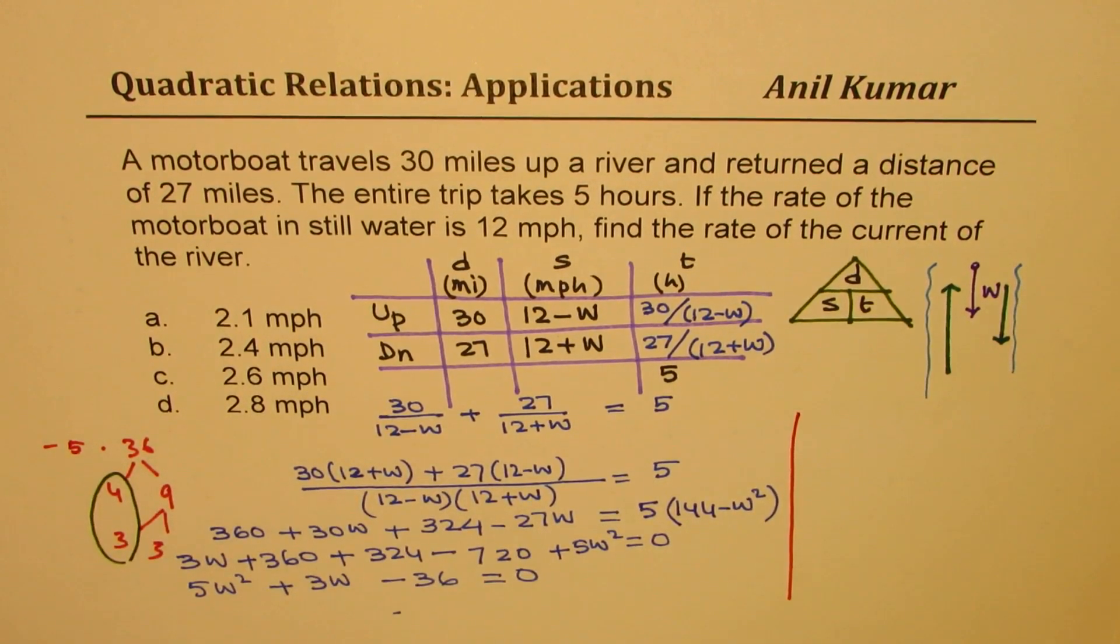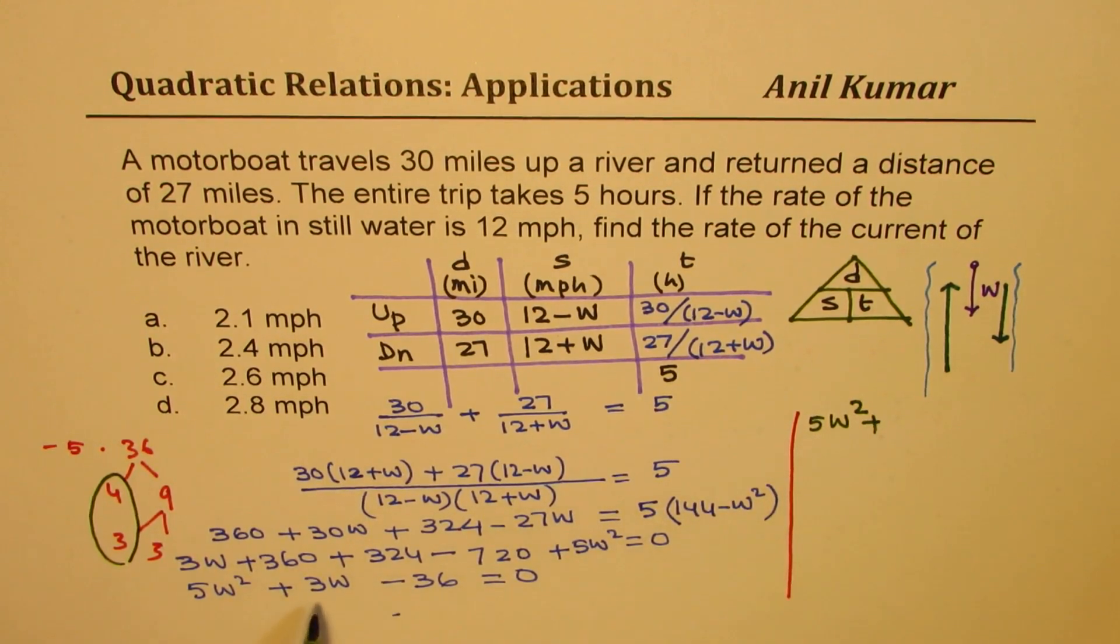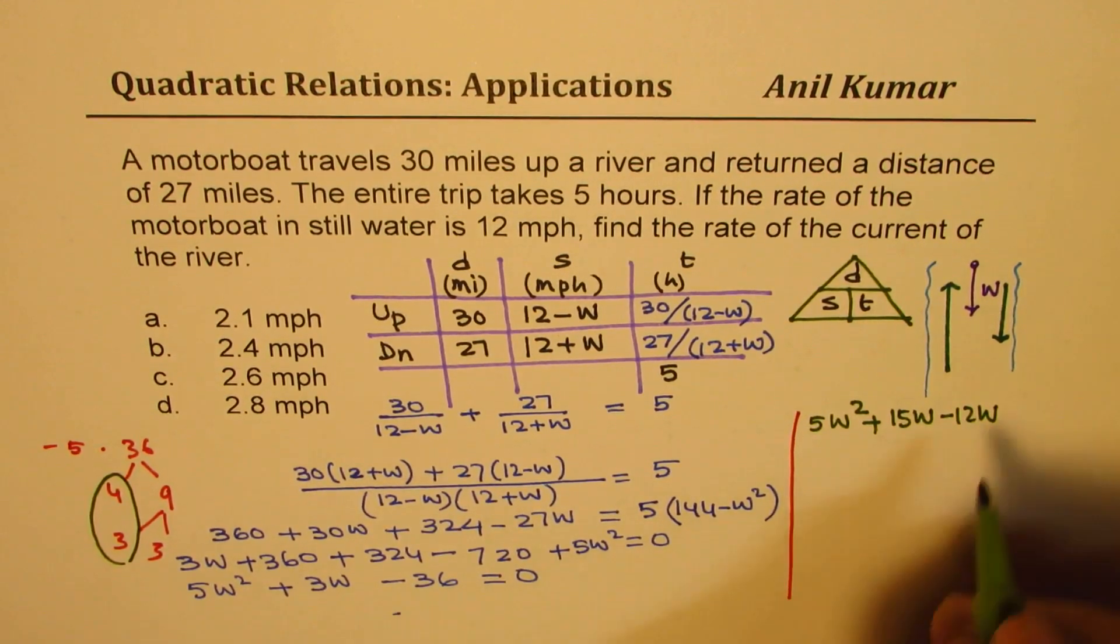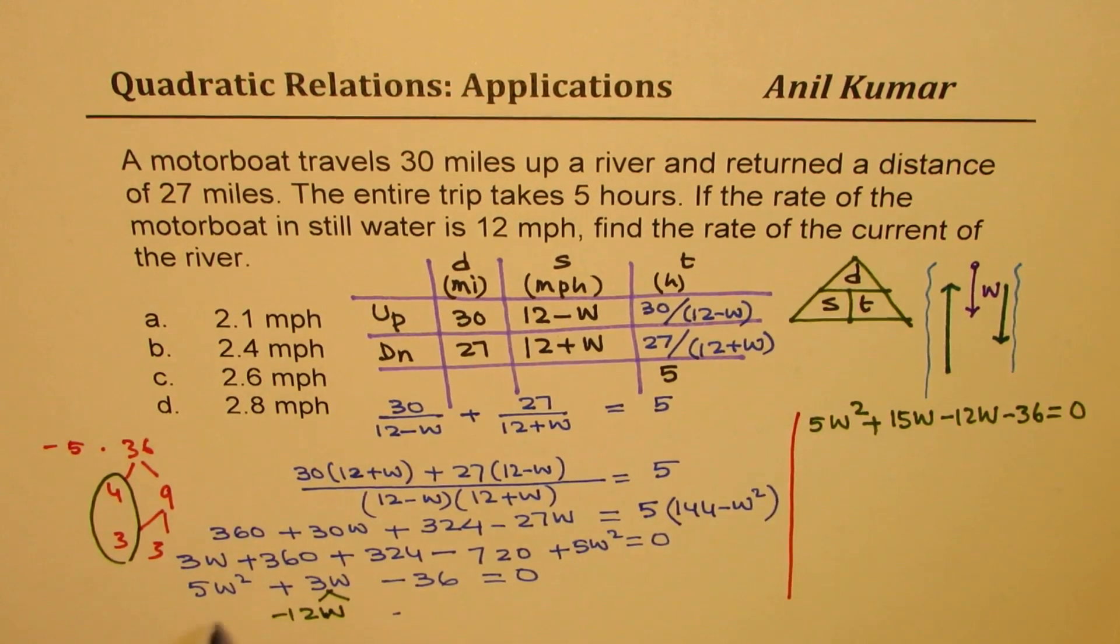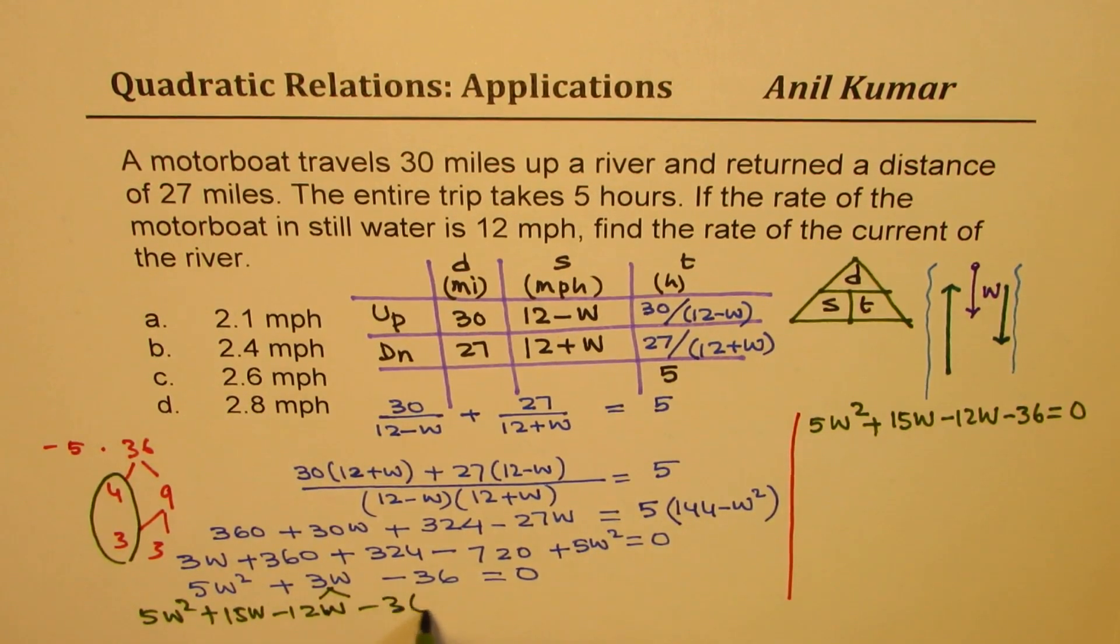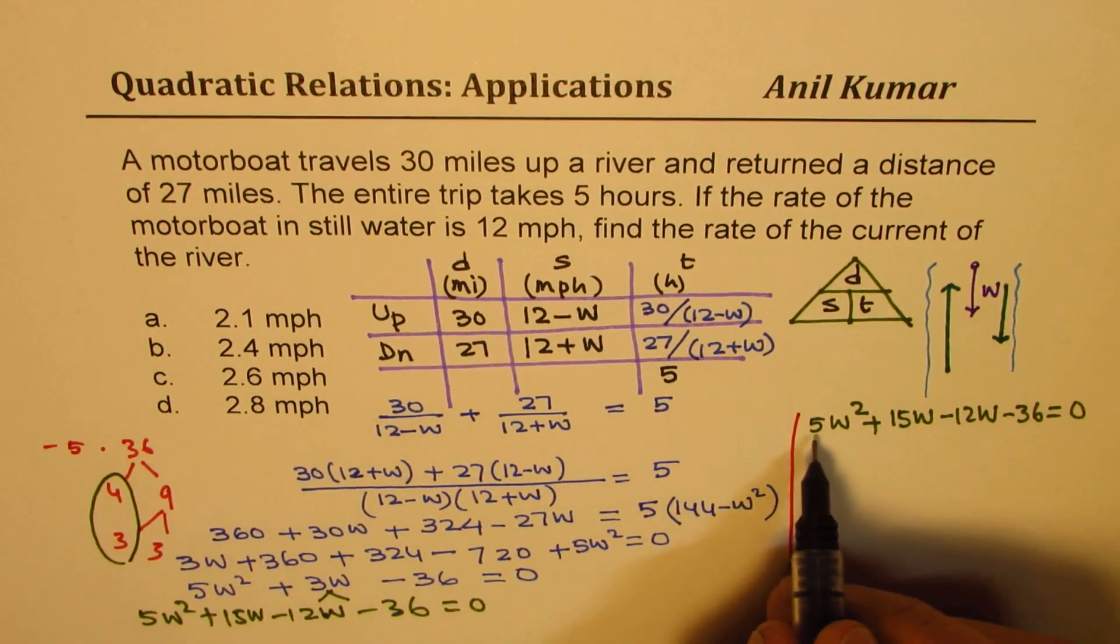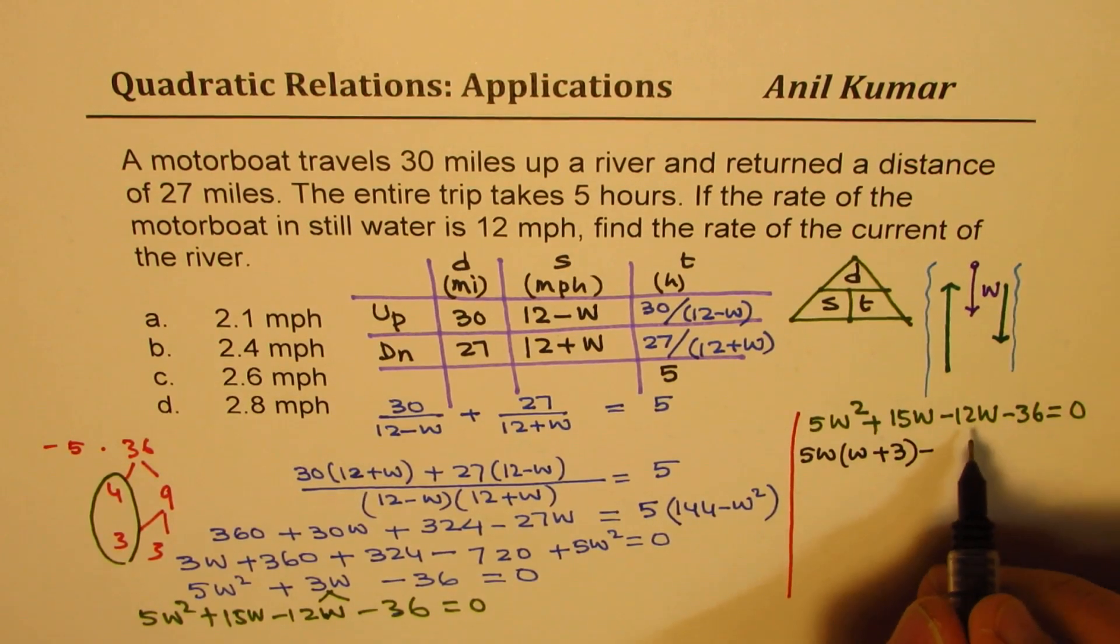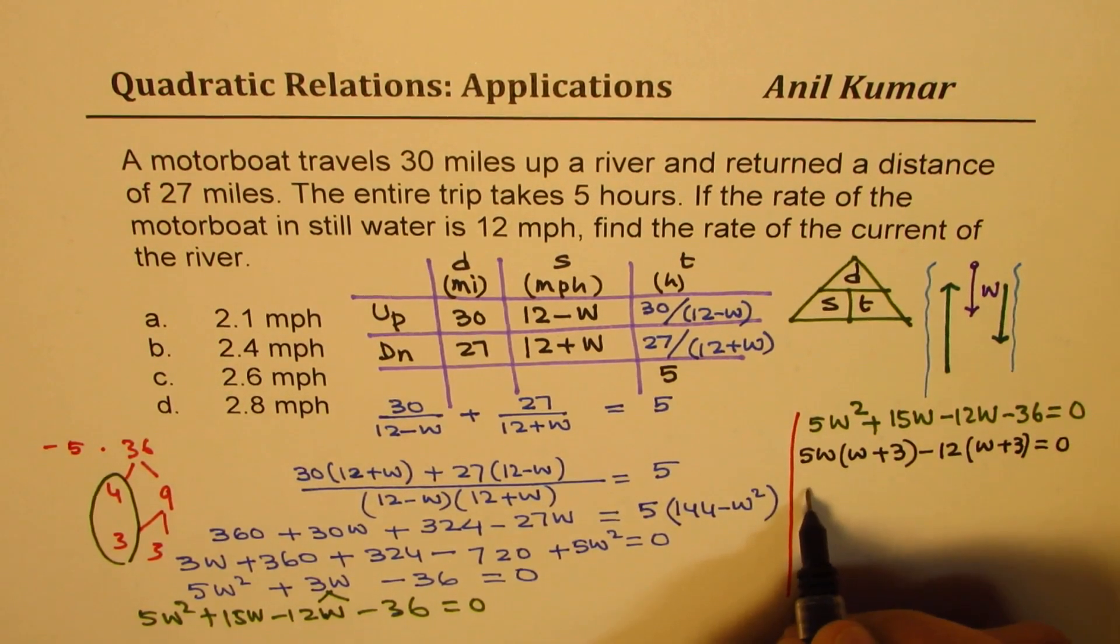So I could write this as 5w squared plus 15, we have to take bigger number as positive, minus 12w minus 36 equals to 0. So we split this into 12, I mean, 15w minus 12w. Let me rewrite. Minus 36 equals to 0, and we'll solve this quadratic equation by factoring. So we can take 5w common, so we get w plus 3 minus, we can take 12 common, w plus 3 equals to 0. So w plus 3 is a common factor. We get 5w minus 12 equals to 0.